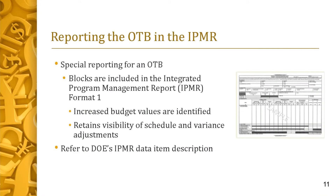Special reporting is required for an OTB project via the Contract Performance Report or Integrated Program Management Report, whichever is on contract. Format 1 is used to reconcile the increased budget values to the CBB or PBB. Any pertinent details on the reporting of the OTB will be included in Format 5. As discussed previously in Step 6 of the OTB process, there are several ways to adjust the variances. Although the variances may have been reset in the OTB process, visibility of the variance adjustments is retained in the IPMR. If the contractor uses a portion of the additional budget to adjust or eliminate variances applicable to completed work, the adjustments made to the cost and schedule variances are also known in Format 1. For more information on reporting an OTB, refer to DOE's Data Item Description for the IPMR.